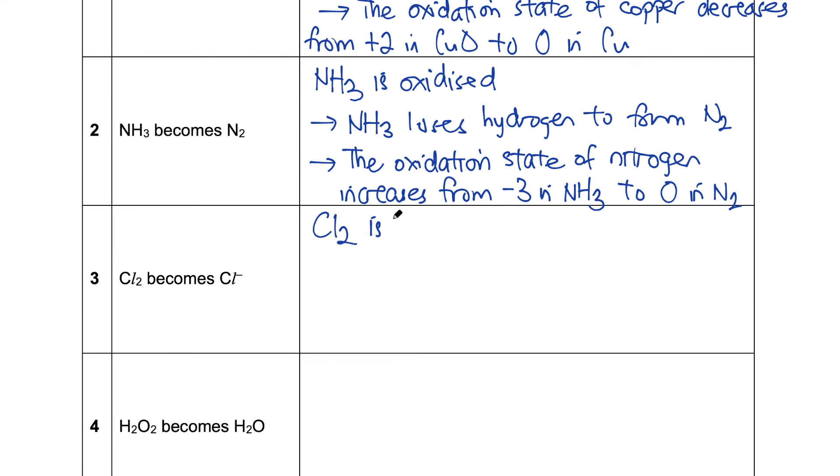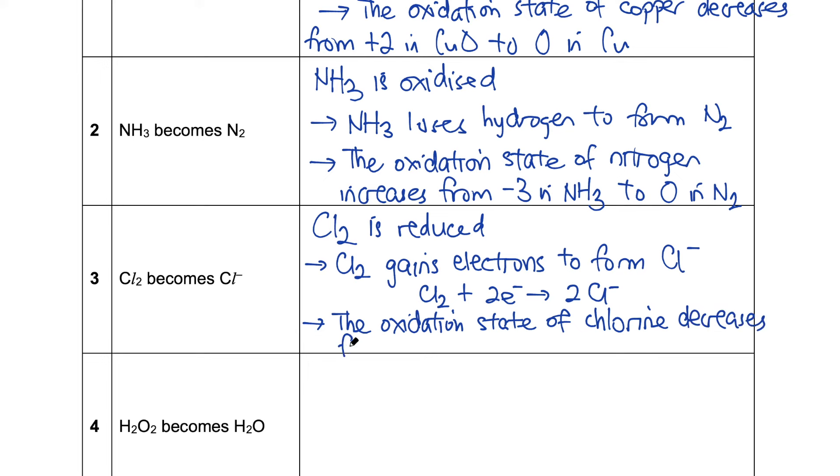In example three, chlorine is reduced. Cl2 gains electrons to form Cl minus and I've written the half equation there just to help you. The other way we can look at it is the oxidation state of chlorine decreases from zero in Cl2 to minus one in Cl minus.